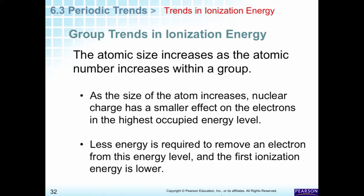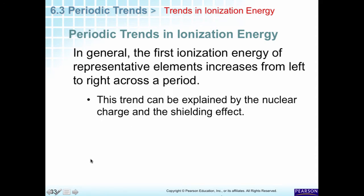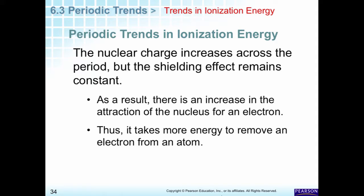Atomic size increases and ionization energy decreases as you go down a group. The electron is held less and less tightly the bigger the atom is, so less energy is required to remove an electron from a farther-out energy level. In the same period, as we add more positive charge in the nucleus, those electrons on the right are held more tightly, so the ionization energy is higher. Across a period, the shielding effect remains constant, so there's an increase in nuclear attraction for the outermost electrons.